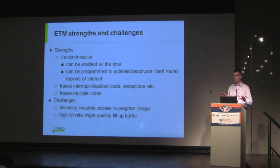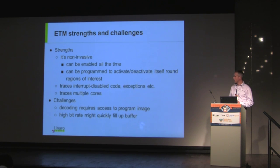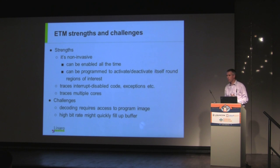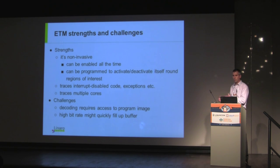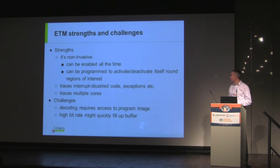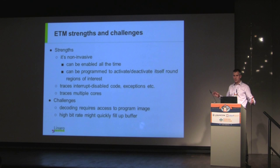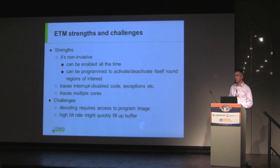You can trace all cores at the same time and correlate them by means of the global timestamp used for trace. The challenges are that it can be tricky to decode on a dynamically changing system where code is being loaded into memory — that can be solved by tracking the address maps, which introduces a slight extra invasiveness. The other challenge is simply the amount of data collected: at 10 gigabits per second per core, with systems scaling up to 16, 48, or more cores, that puts limits on how much trace you can capture.